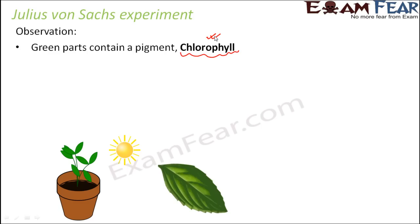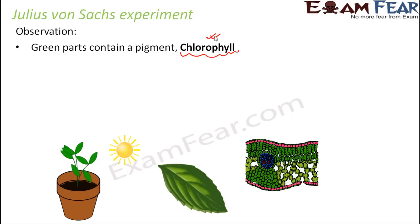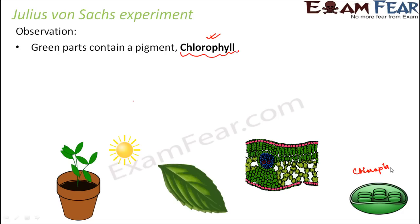Chlorophyll is a pigment present in the green parts of the plant, and that is why only the green parts release oxygen. On studying the leaf further, it was found that this is how the cross-section of a dicot leaf looks. The mesophyll layer was found to contain organelles called chloroplasts, and these chloroplasts contained chlorophyll.